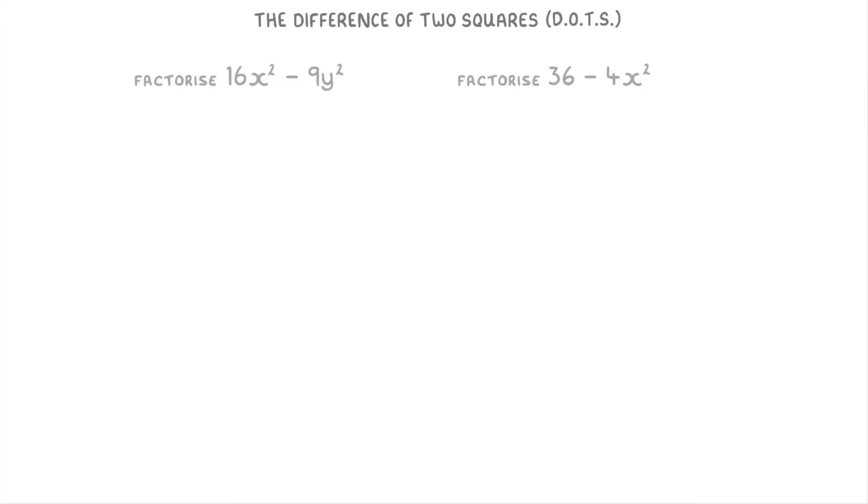The way we work it out though is exactly the same. So the first step is to find the square root of each term. The square root of 16x squared is just 4x because the square root of 16 is 4 and the square root of x squared is x.